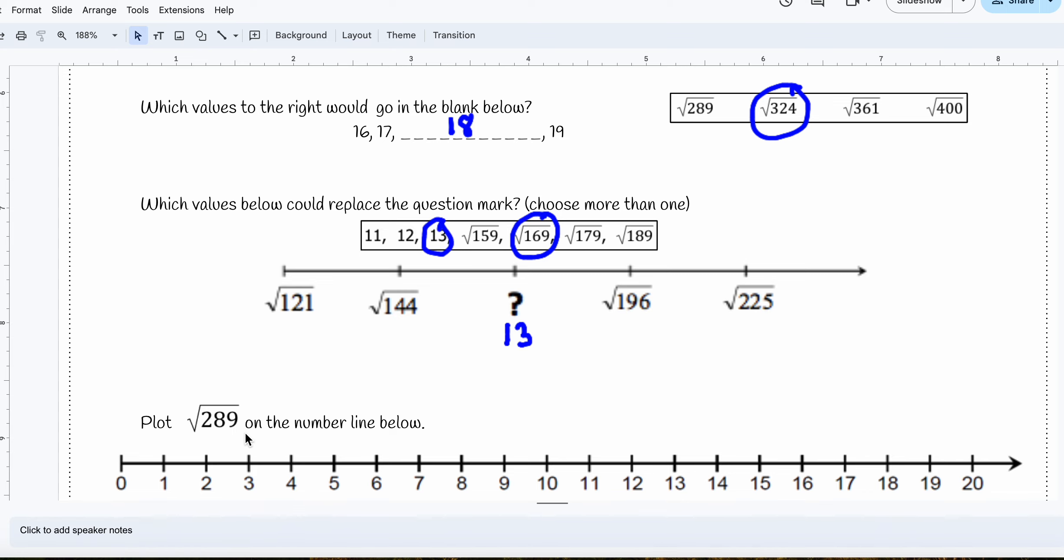And finally, the square root of 289 is 17. So I'm going to make a dot on 17.